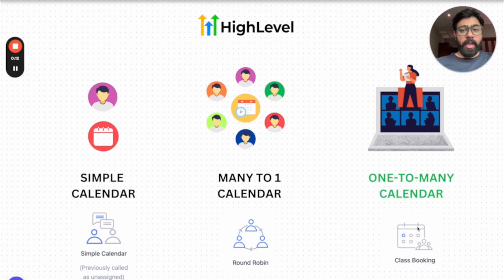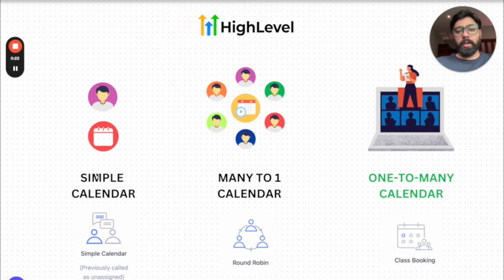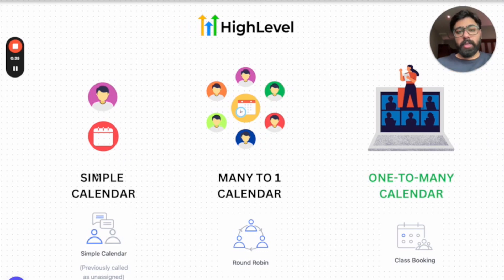The most basic and simple one is now called a simple calendar — it was previously called an assigned calendar — where we just have one agent or one person to lead the meeting, and there's only one person booking into it. Each lead will have different appointments within the same simple calendar. This is a perfect use case for chiropractic practices or marketing agencies that only have one salesperson and want to dedicate a specific calendar to one person only.